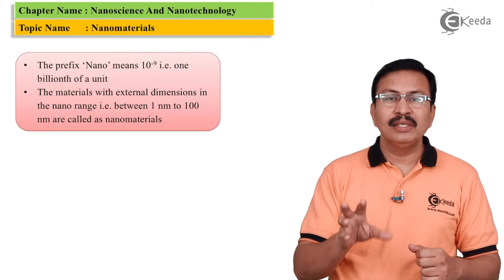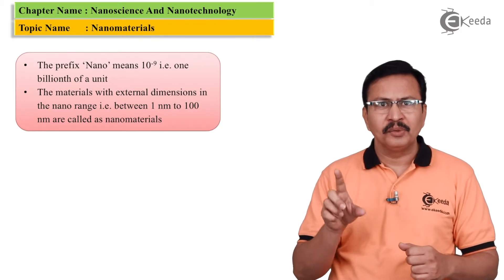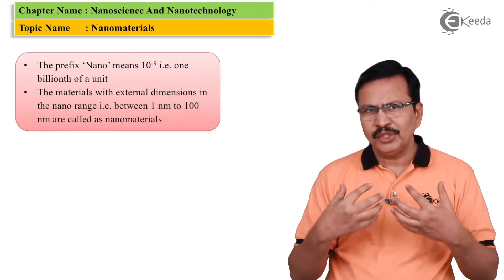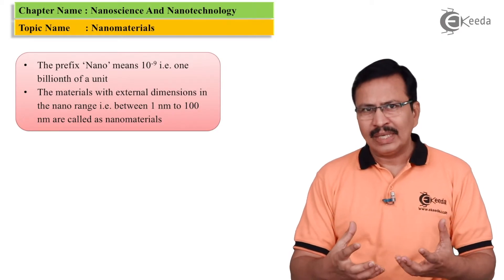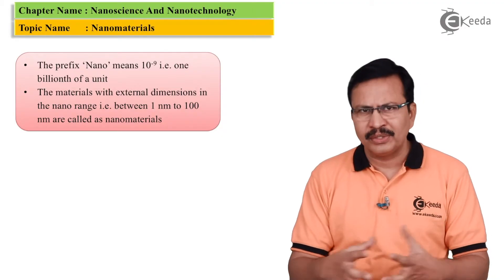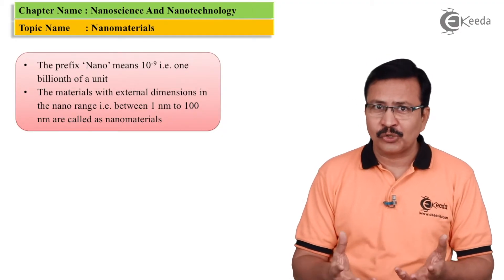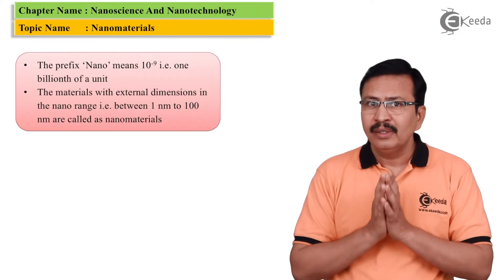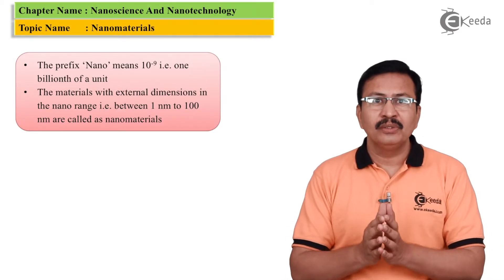Which in short we write it as 1 nanometer. Now let us compare this unit with a unit which we know and that is also as small as a nanometer and that is an angstrom.